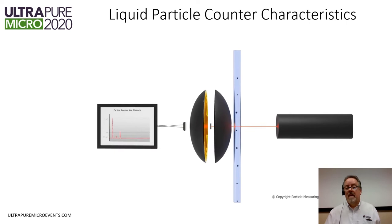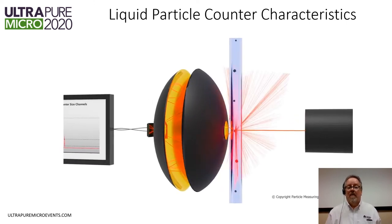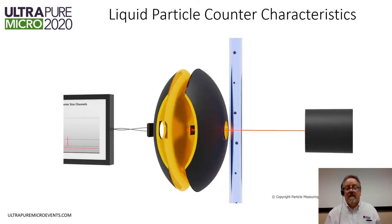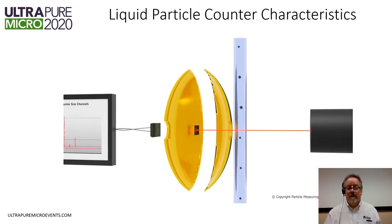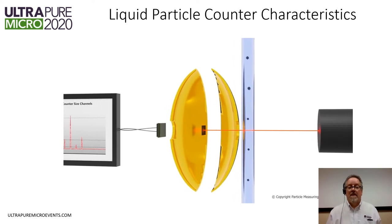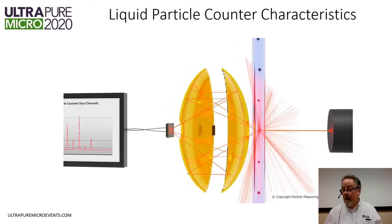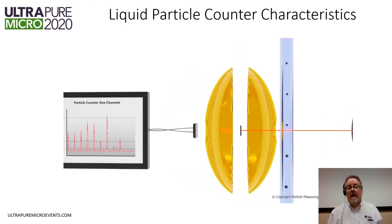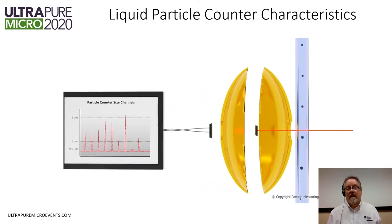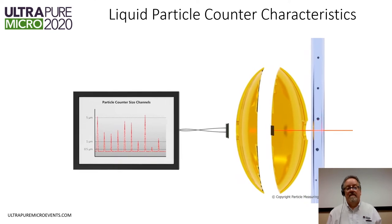You can see here, as the particles pass through the beam, small particles scatter a little bit of light and create a small signal. Large particles scatter a lot of light and create a bigger signal.